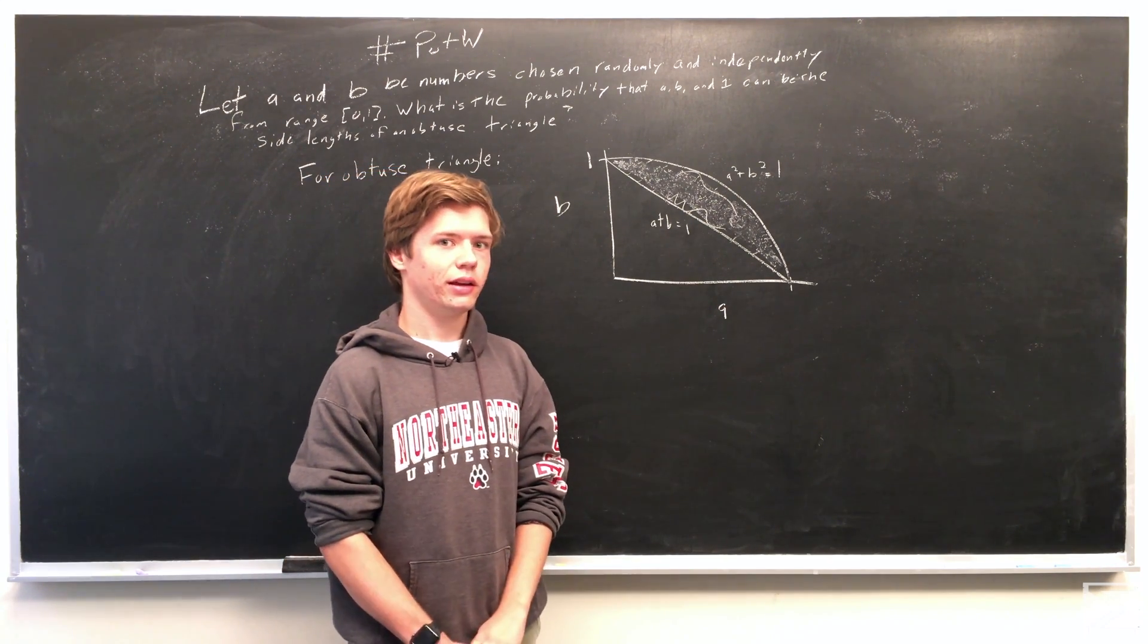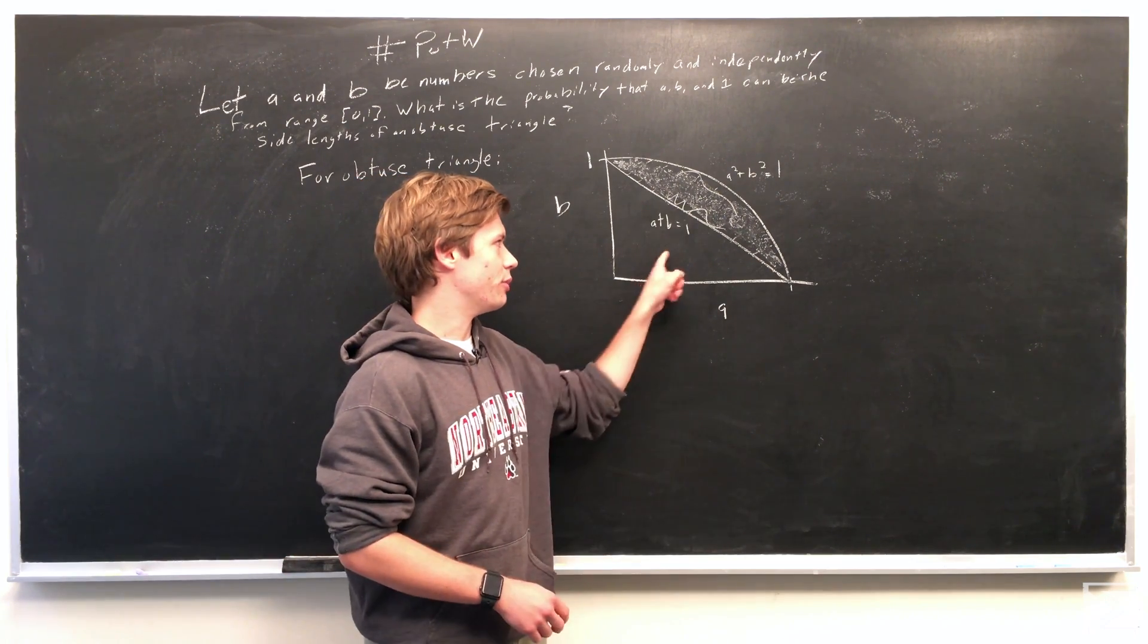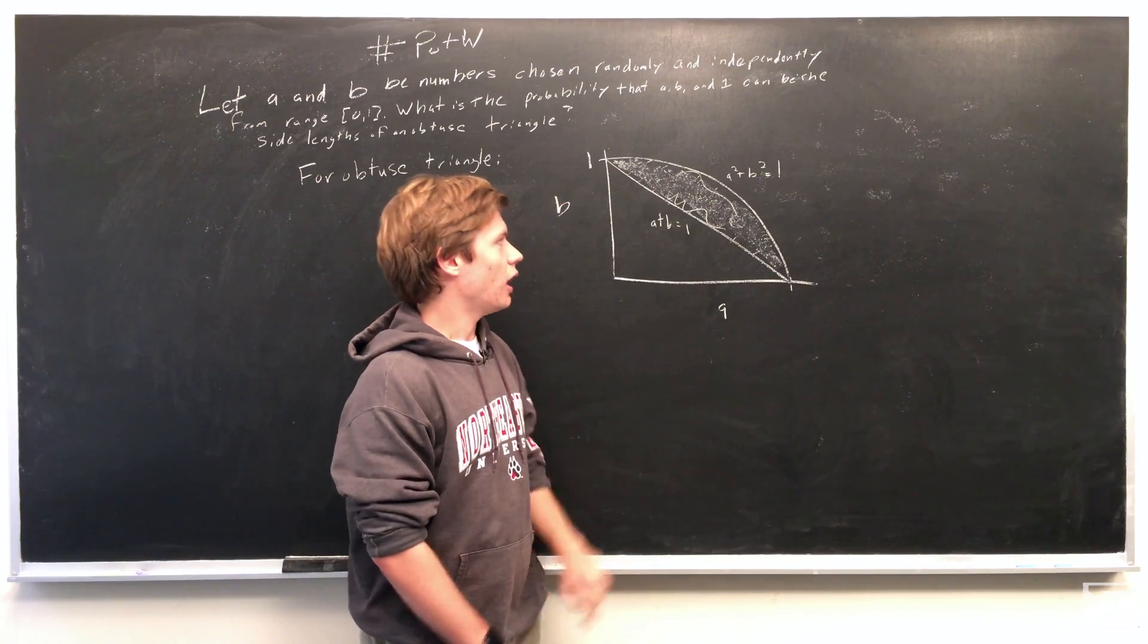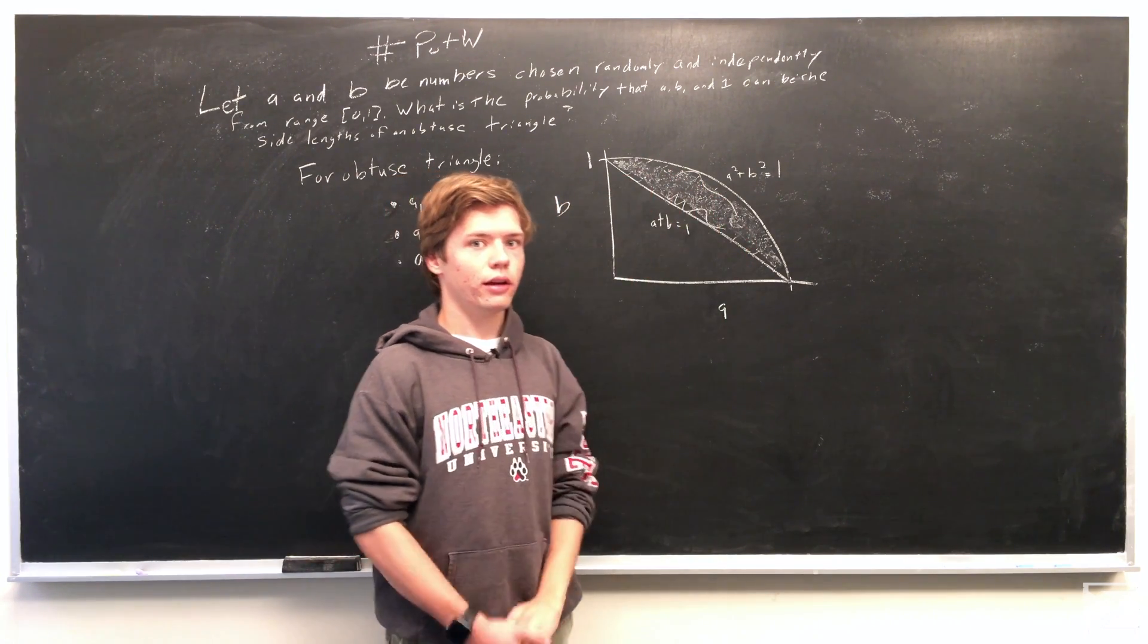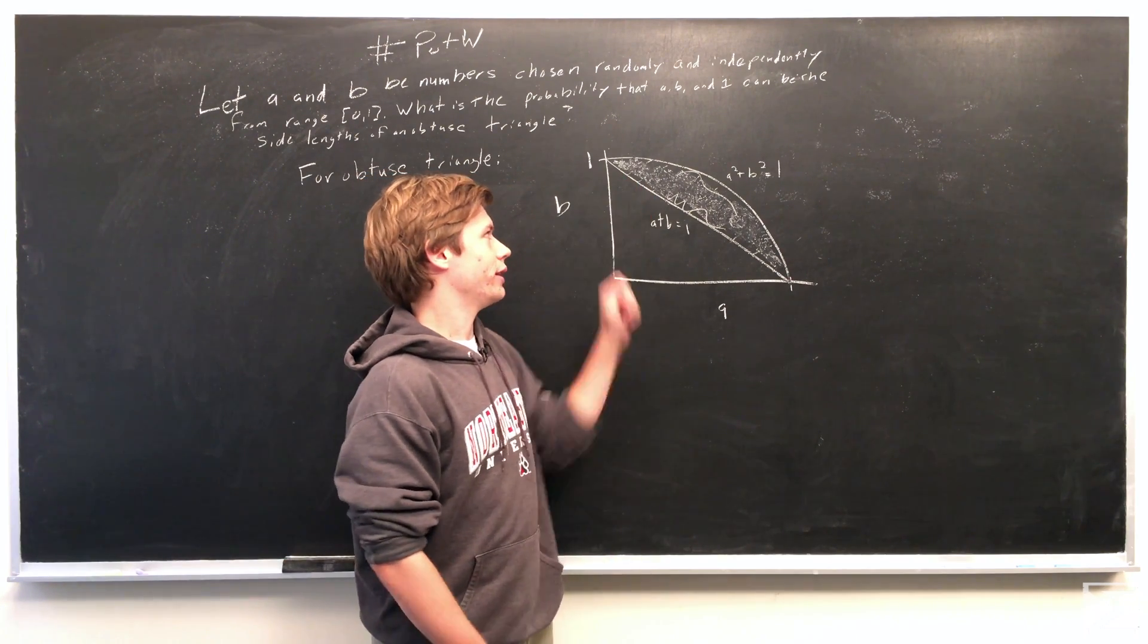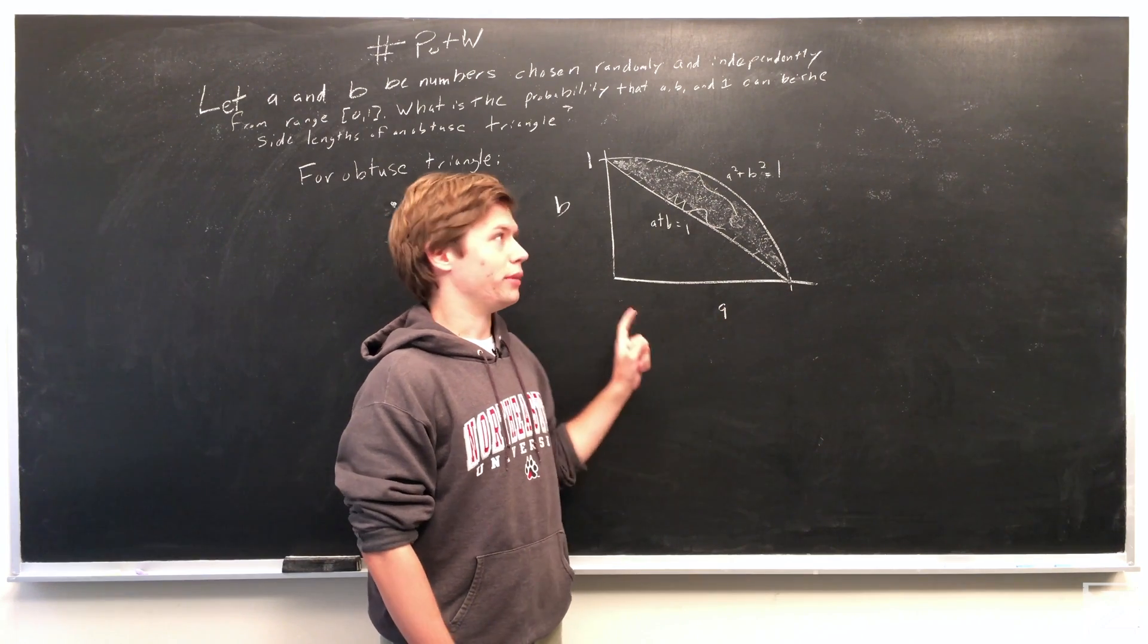So what we need to do is find the probability that if we chose a point anywhere in this 1 by 1 grid, it would be in this shaded area. And so because the area of this grid is just 1, because A's maximum length is 1 and B's maximum length is 1.